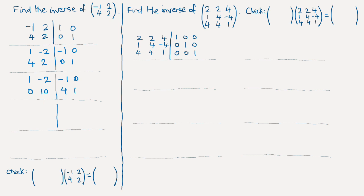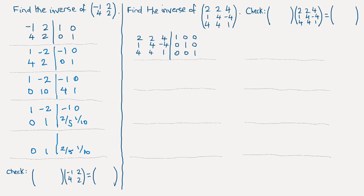Next, leaving the top row again, we want to get a 1 in the bottom right corner. Dividing that second row by 10 will do it — we're getting fractions now, so things are a little more complicated. But we're nearly there because the second row is now where we want it. For the first row, all we need is a 0 in the top right element, which we get by adding 2 times the second row.